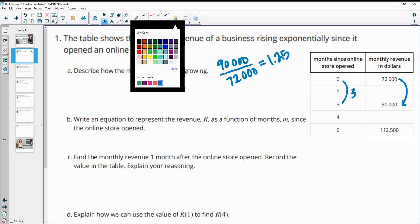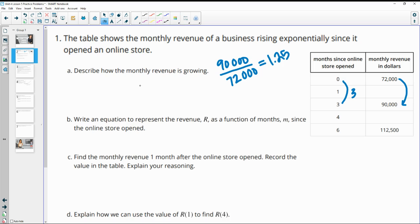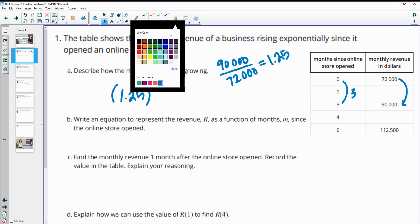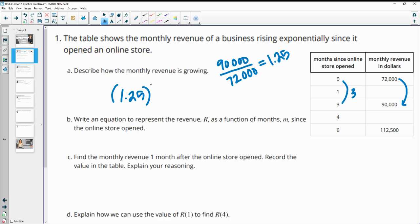So in order to write that as monthly growth, we need to take that growth factor and then take it to the one third power. So a third of that time period.